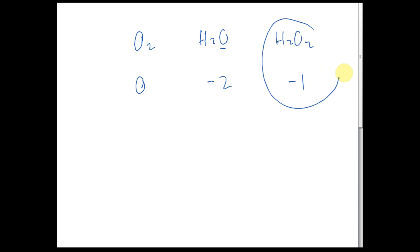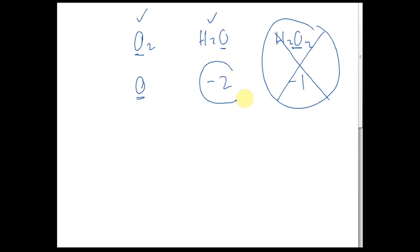Usually this negative 1 case seldom comes out. This is peroxide, and the only peroxide you need to know is H2O2, but usually it won't come out. For the compounds of oxygen, if it's O2 as an element, the oxidation state is 0. But in a compound, the oxidation state of oxygen is always negative 2. That's why you always see negative 2.